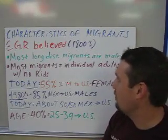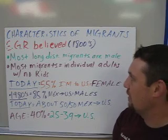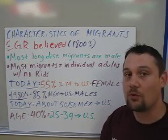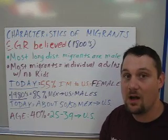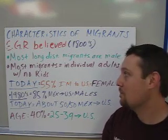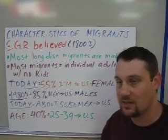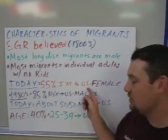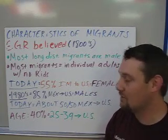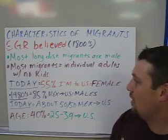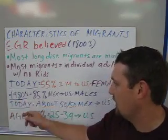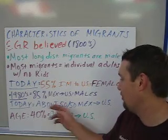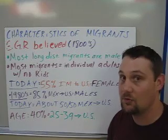Finally, we have characteristics of migrant people. Ravenstein believed in the 1800s that most long-distance migrants were men, because back then men were seen as the breadwinners who would go out and find work — they were more likely to work than women in the 1800s. He also believed that most immigrants were individual adults. Today, 55% of immigration to the United States is female, not mostly male like Ravenstein believed, because times have changed. And as recently as the 1980s, 85% of Mexican immigrants to the United States were male — today that ratio is about 50/50 male and female.